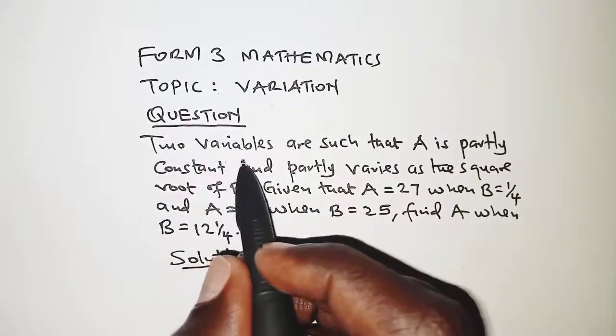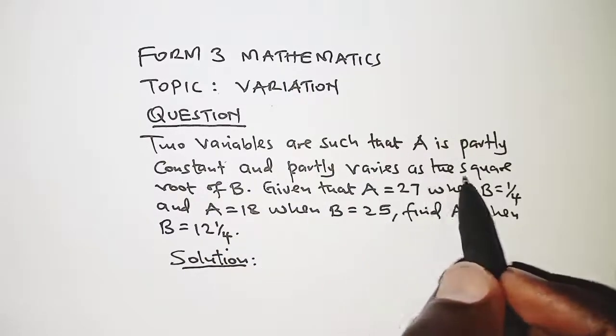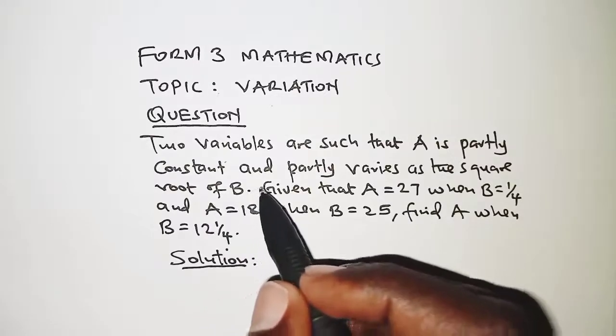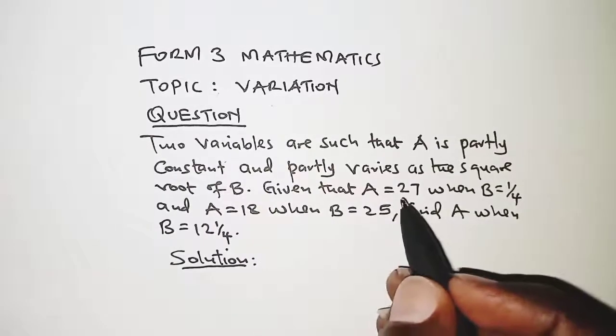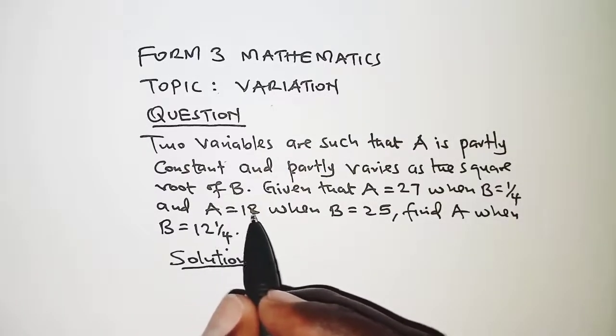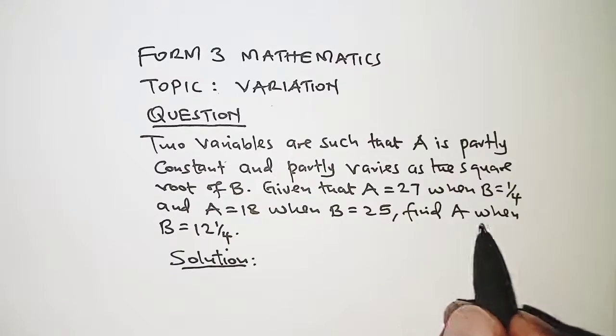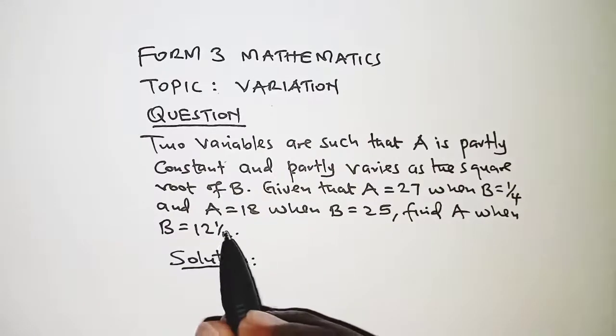Two variables are such that A is partly constant and partly varies as the square root of B. Given that A is 27 when B is a quarter and A is 18 when B is 25, find A when B is 12 and a quarter.